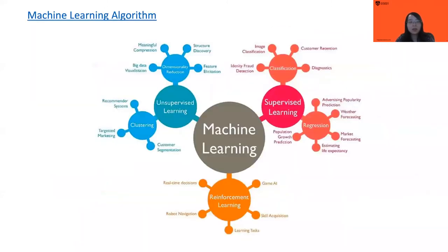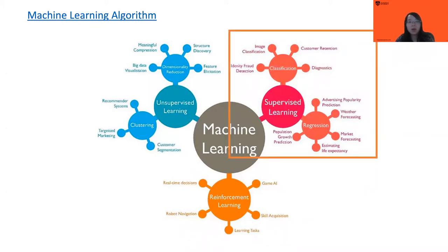Generally speaking, machine learning can be broadly classified as supervised, unsupervised, and reinforcement learning algorithms. For supervised learning, we start with an input variable X — this could be images, language input, or audio input — and we have a corresponding label Y, indicating which class it belongs to, such as digit six or digit eight. We try to map a function from the input to the output, establishing a relationship that can be used for prediction.